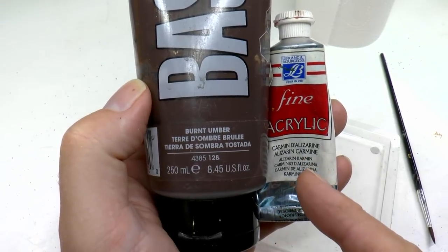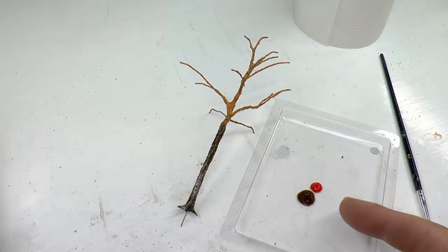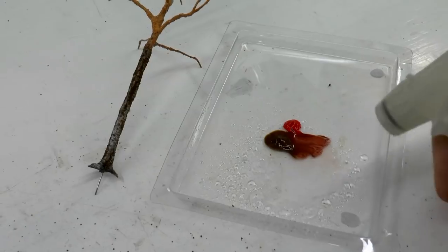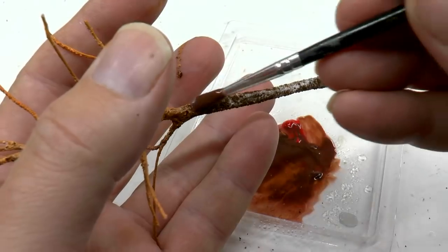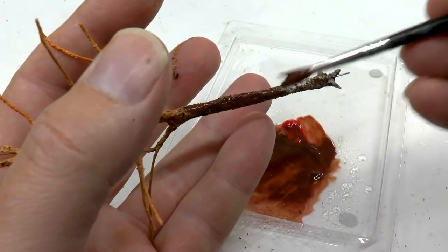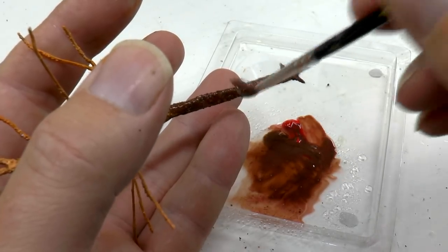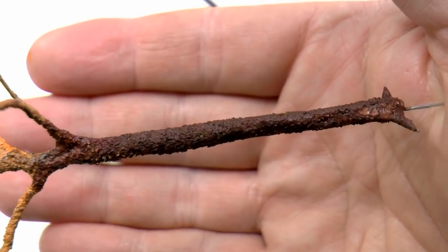Now for the trunk I mix burnt umber and red acrylic paint. I want this color to be a bit thinner so I thin it with a mix of water and alcohol. I then brush it onto the entire trunk and this is what it looks like when it has dried.